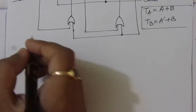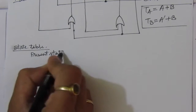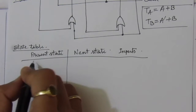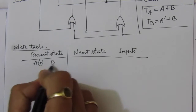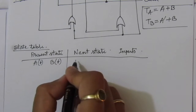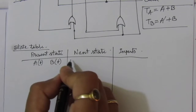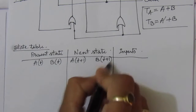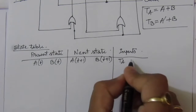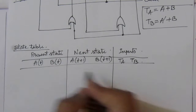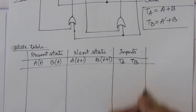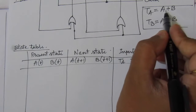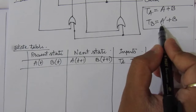Now let us make the state table. For the state table we will have present state columns — A(T) and B(T) — then next state columns A(T+1) and B(T+1), and the inputs TA and TB. Since we have two variables in the present state, we will have four combinations. We can find TA and TB using these two equations, and then find the next state using the T flip-flop operation.